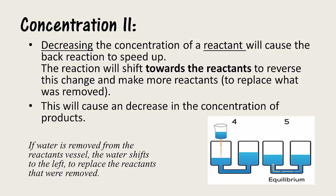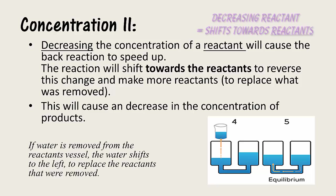Decreasing the concentration of the reactant will cause the rate of the back reaction to speed up. The reaction will shift towards the reactant side to reverse this change and make more reactants. This will, of course, cause a decrease in the concentration of products. In summary, decreasing the concentration of the reactant will cause the equilibrium to shift towards the reactant side.